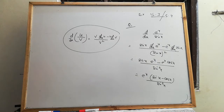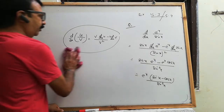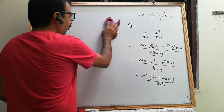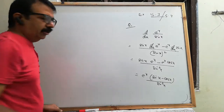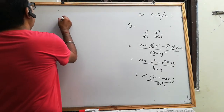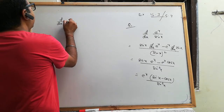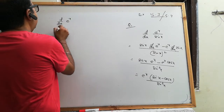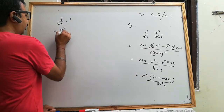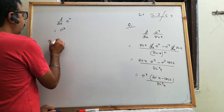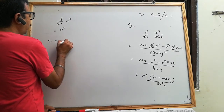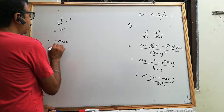Next, second question. e to the power of x के बारे में बता दिया था, क्योंकि यह एक नया function है इस exercise में। e to the power of x में e जो है, वो 2.7182 — this is a constant.